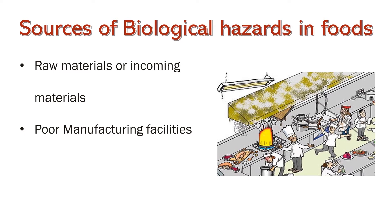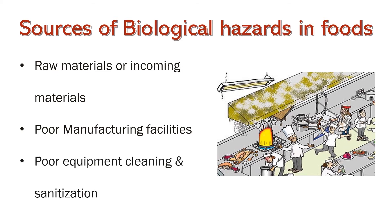Poor manufacturing facilities: if the manufacturing facility, processing area, or food kitchen is not properly maintained, then the facility itself becomes a source of various food safety hazards like growth of microbes and insects. Poor cleaning and sanitization — improper cleaning and sanitization of processing equipment and utensils like cutting boards may increase cross-contamination of food products.